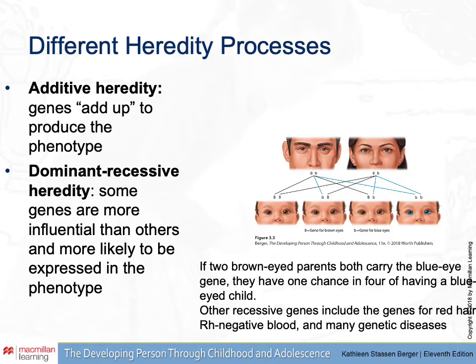A dominant-recessive heredity process is different. This is where some genes are given more power or are more influential than others in determining the expression of a certain trait. The genes that tend to win out when they are present are referred to as dominant — they're more likely to express the trait they code for. Genes that tend to lose in these combinations are referred to as recessive. One familiar example: if two brown-eyed parents carry a blue-eyed gene, they have a one-in-four chance of having a blue-eyed child. Three times out of four they'll have a brown-eyed child — that's an example of brown eyes being dominant over a recessive blue-eyed gene.